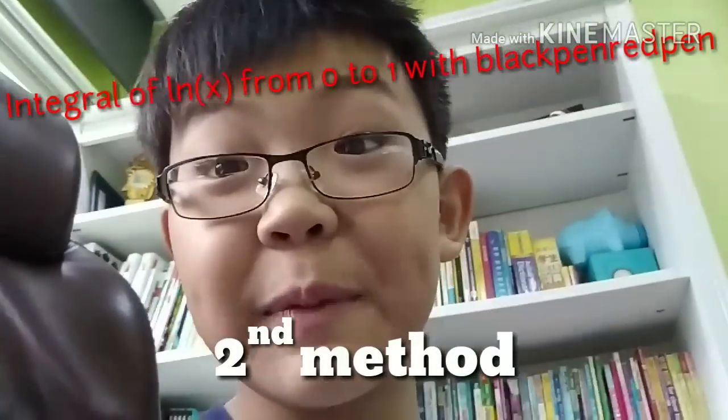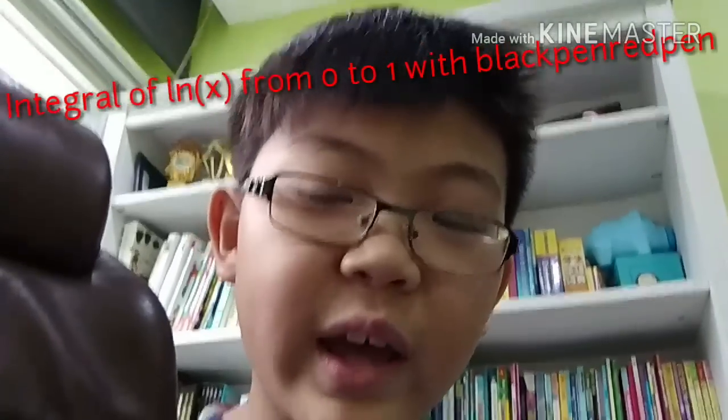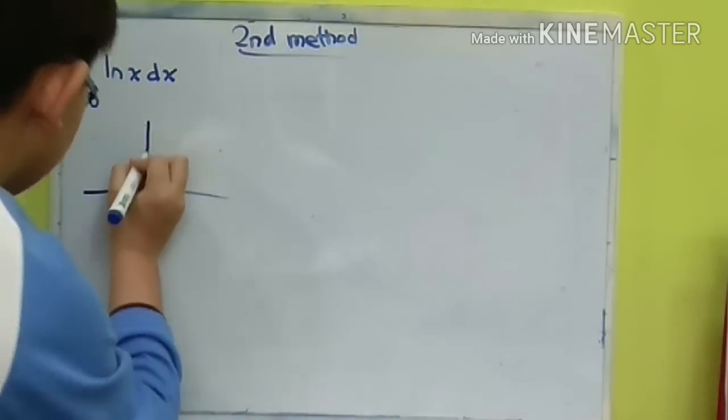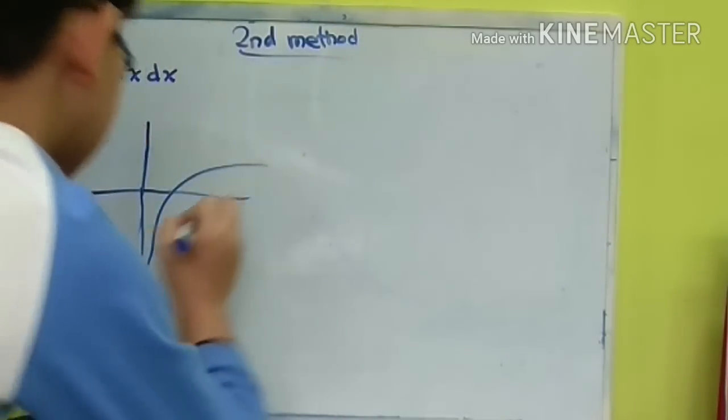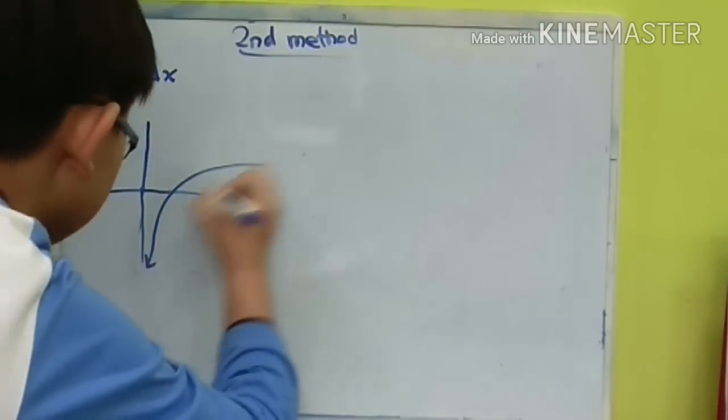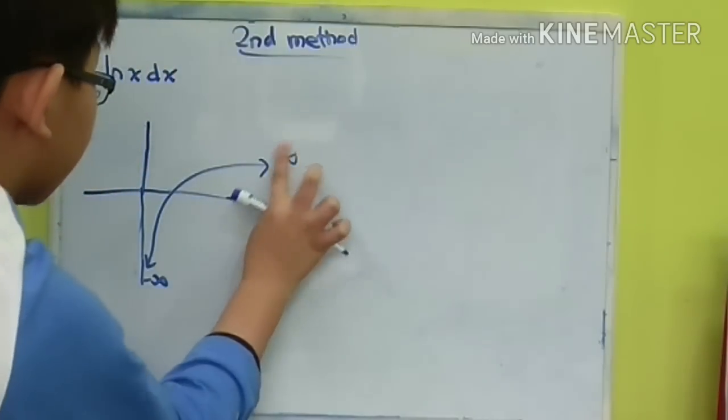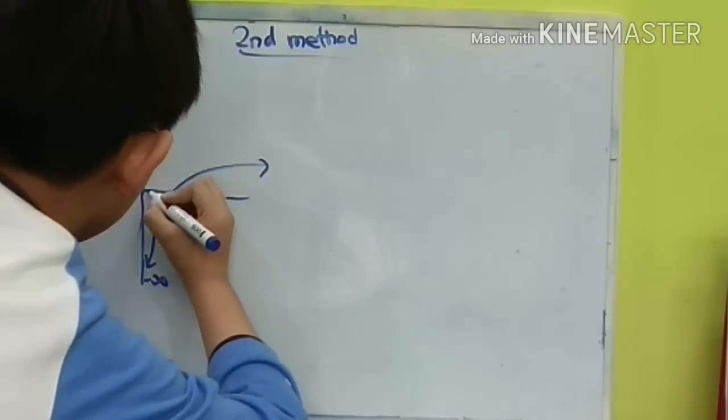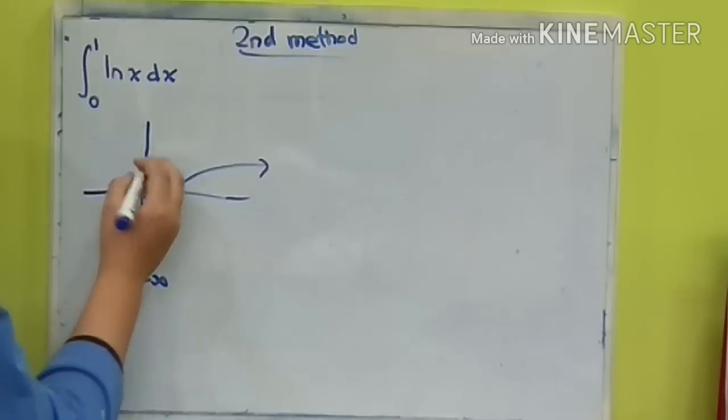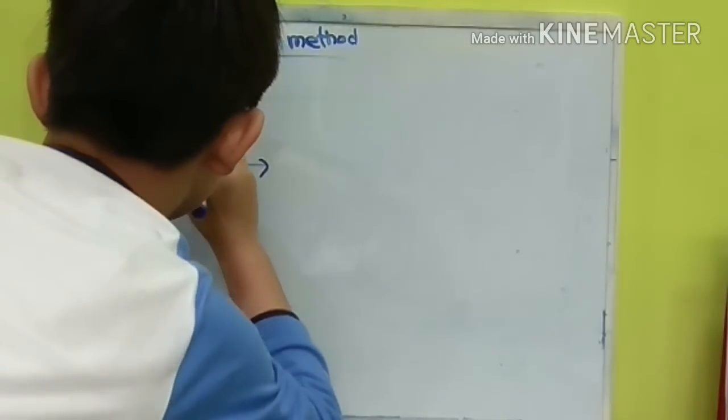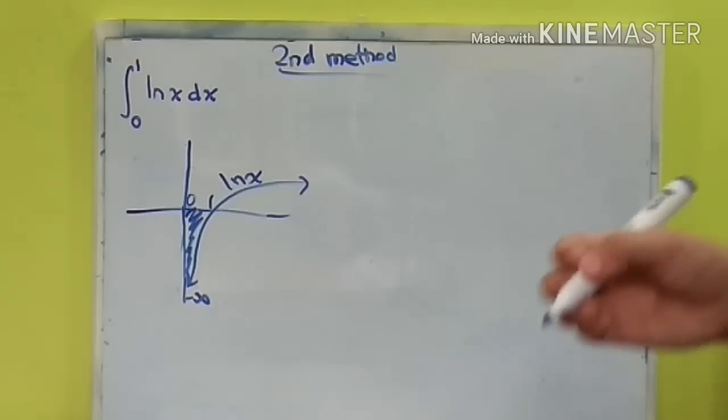Hi everybody, it's me, Oon Han. I'm going to be blackpenredpen's guest speaker today, showing the second way of finding the integral from 0 to 1 of the natural log of x with respect to x. To find this integral, I'm going to be using a different method which relies on inverses. First, we have the graph of the natural log of x. This goes down all the way to negative infinity and goes up to infinity, but in this case I don't care about that.